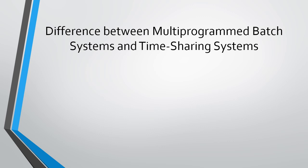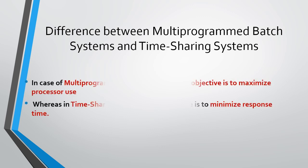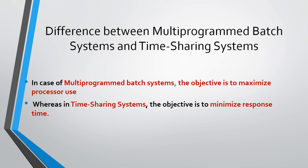What's the difference between a multi-programmed batch system and a time-sharing system? In a multi-programmed batch system, the objective is to maximize processor use. But in the case of a time-sharing system, the objective is to minimize response time. Response time can be considered as the time taken to get an output after providing the input.